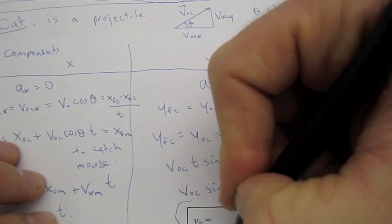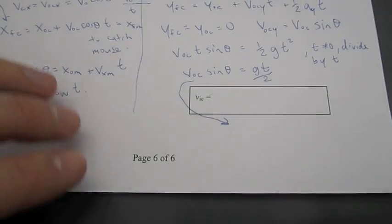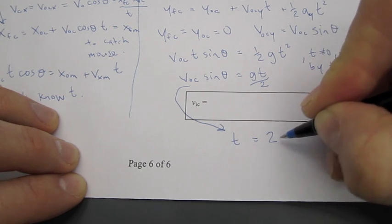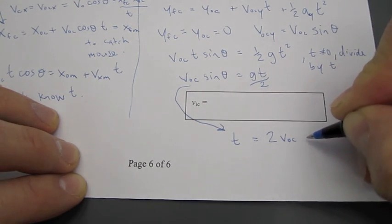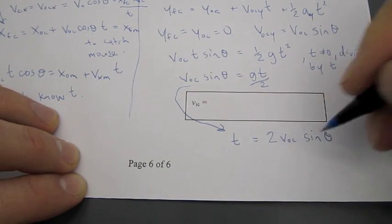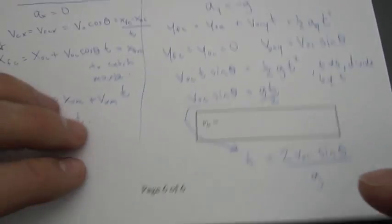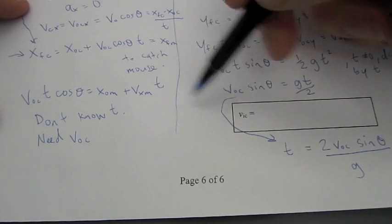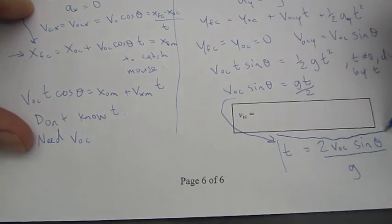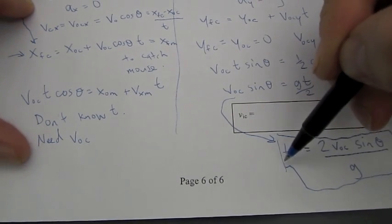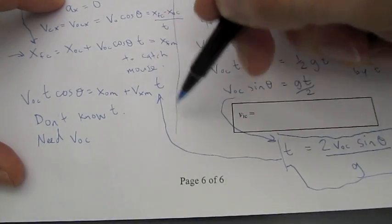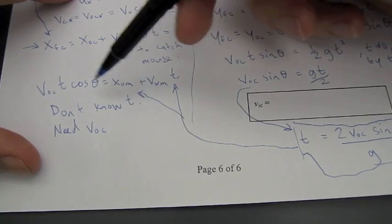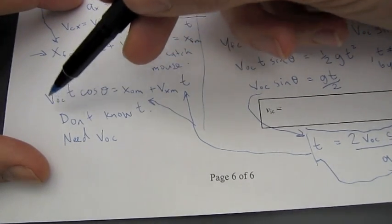And, so, we're not quite done yet here, so let's go down a little bit further, solving here for T, you get T equals 2 times V sub 0 C times sine theta divided by G. So, what we did is we just used the Y components to solve for the time, and we needed the time over with the X component to solve that. So, we're going to take this time and plug it in over here and over right there, and then solve for the only remaining unknown, which is V 0 C.